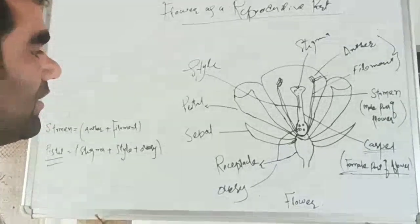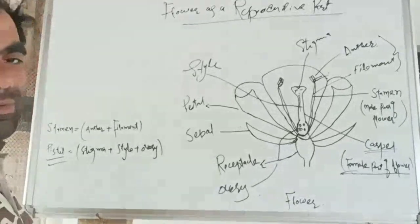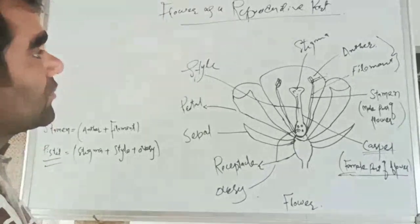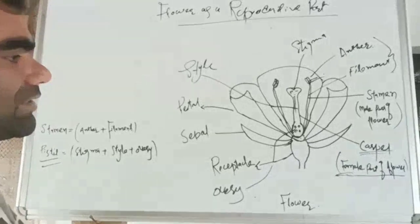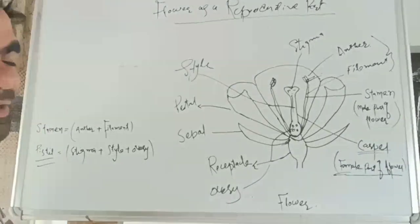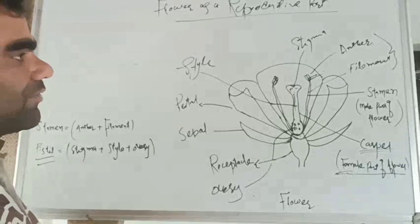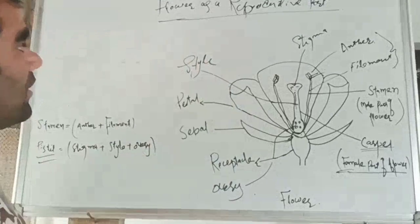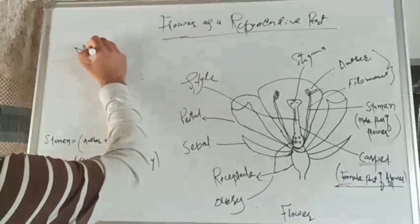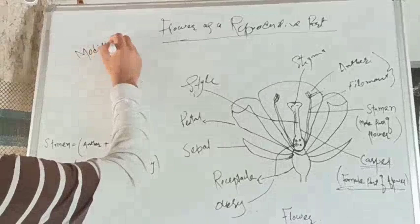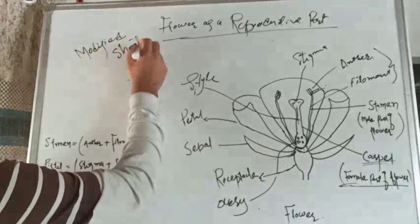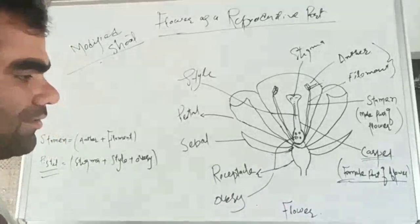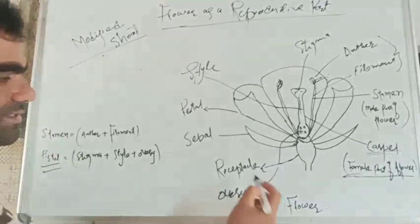I have already drawn this diagram because this is a video I have to make in about five minutes, so due to short time I have already drawn the picture diagram of a flower. Flower is known as the reproductive part, and it is also known as a modified shoot. We will discuss the parts of flower one by one.